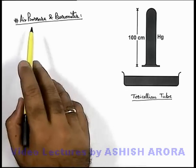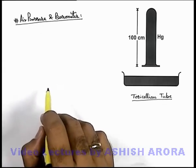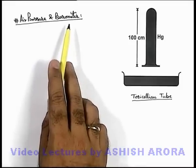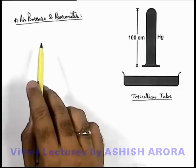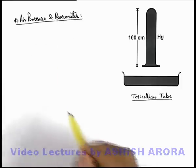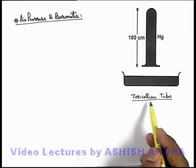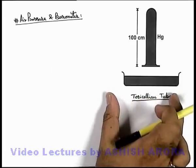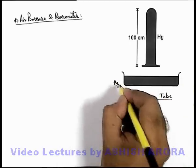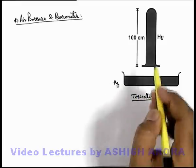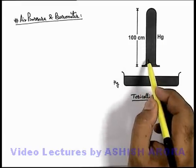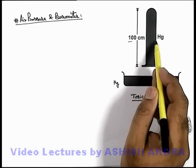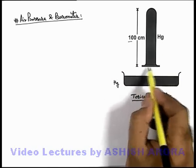Let's start with air pressure and barometer. A barometer is basically an equipment which is used to measure atmospheric air pressure. A barometer is constructed by a Torricellian tube, in which there is a container or a broad jar in which mercury is filled. Over which we take an inverted mercury tube — a test tube or a long tube of 100 centimeters in length filled with mercury, which is closed at the bottom by a piece of glass.